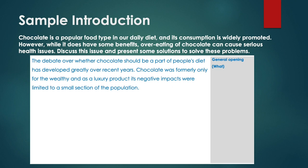Let's look at a sample introduction for this problem-solution essay about chocolate. This introduction is divided into the what, why, and how parts. The general opening — the what — is in blue: 'The debate over whether chocolate should be a part of people's diet has developed greatly over recent years.' It then tells us that in the past, only the wealthy ate chocolate as it was a luxury product, so its negative effects were limited. So it's giving us some background information.